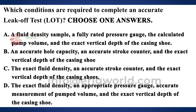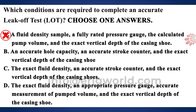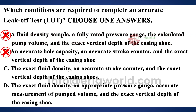Let us select the right answer. Option A says 'fluid density sample' — that's wrong; I need exact mud density, not a sample. It also says 'fully rated gauge,' which is also wrong. Option B says 'accurate hole capacity' — but there is no relationship between volume and hydrostatic pressure; even small volumes can exert greater pressure. So option B is also wrong.